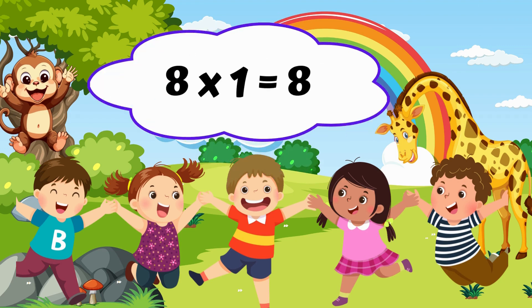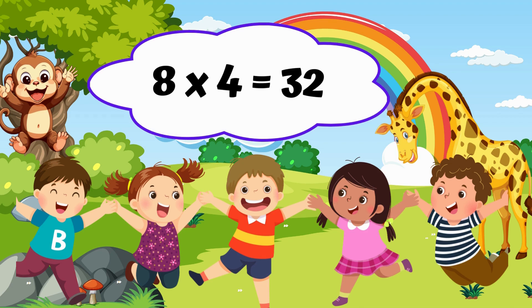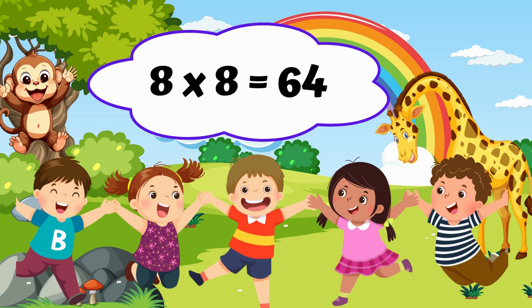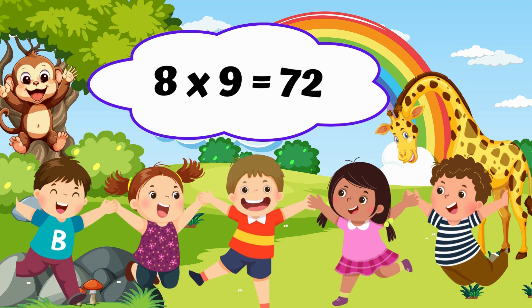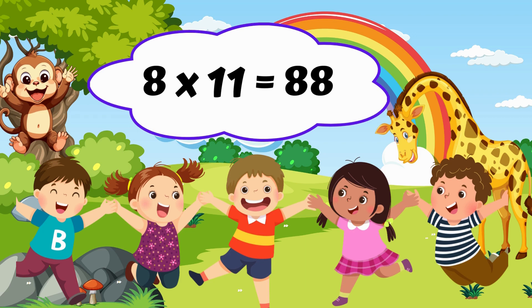Eight ones are eight. Eight twos are sixteen. Eight threes are twenty-four. Eight fours are thirty-two. Eight fives are forty. Eight sixes are forty-eight. Eight sevens are fifty-six. 8 8's are 64. 8 9's are 72. 8 10's are 80. 8 11's are 88. 8 12's are 96.